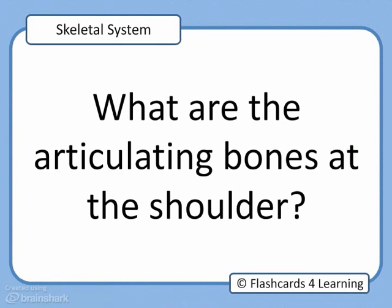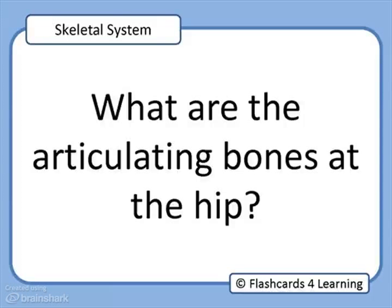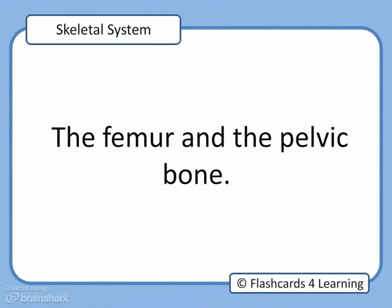What are the articulating bones at the shoulder? The humerus and the scapula bones. What are the articulating bones at the hip? The femur and the pelvic bone.